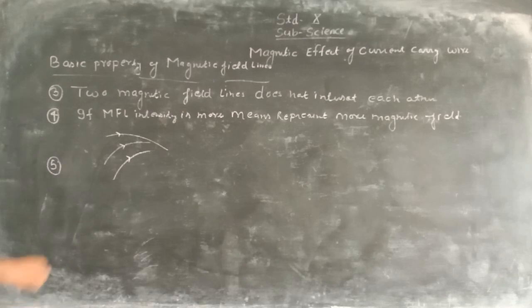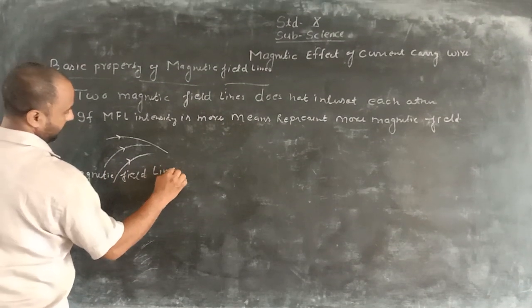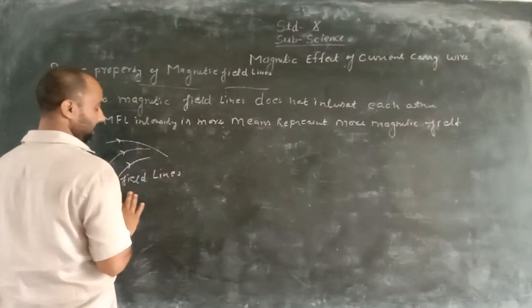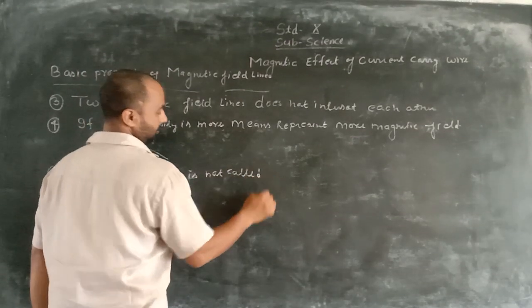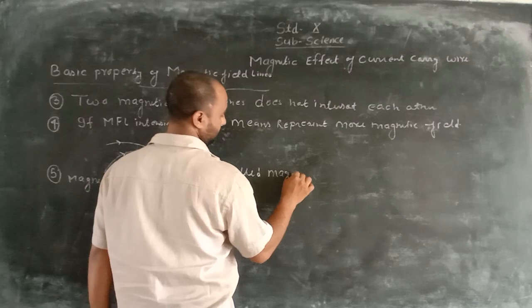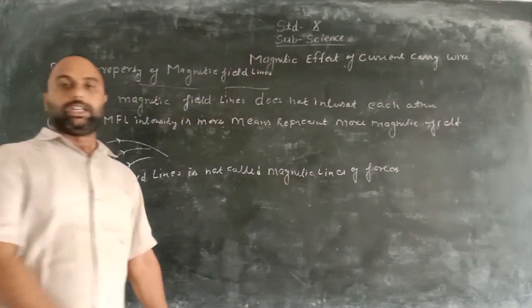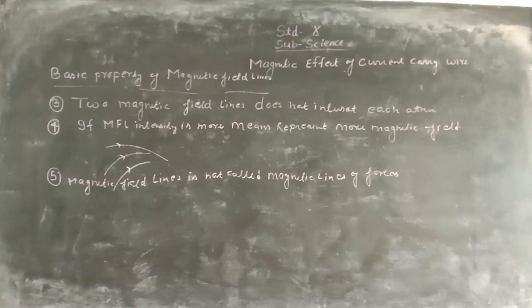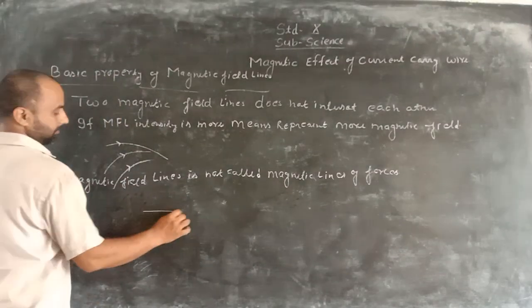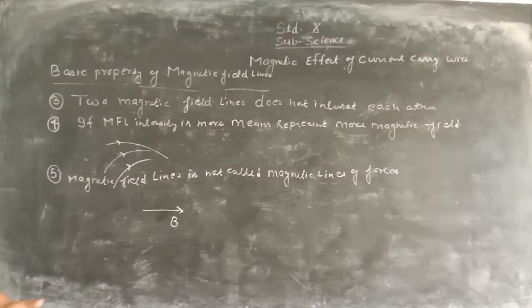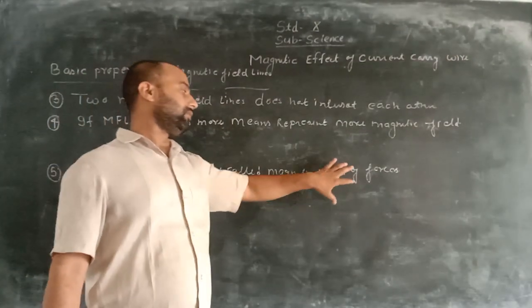The fifth basic property of magnetic field lines is that magnetic field lines are not called 'magnetic line of forces.' This is because the direction of the magnetic field is different from the force direction. If magnetic field lines are in one direction, the direction of force may or may not be in the direction of the magnetic field. Because of that reason, these field lines are not called magnetic line of forces.